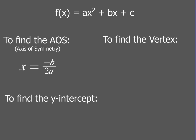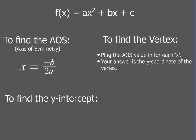The next thing we're gonna do is find the vertex. Whatever answer we got from the axis of symmetry, we're gonna plug that value in for every single x in our equation. The answer we get will be the y-coordinate of the vertex. To find the y-intercept, we are always gonna use the form zero comma c — whatever number is sitting in the c-spot, that is going to be your y-intercept.